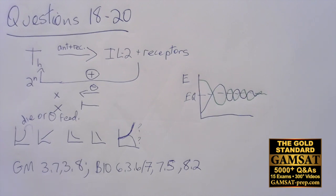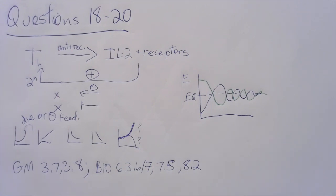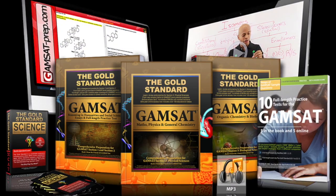And for some background information, you can look at graph analysis and exponential curves, GAMSAT math, 3.7, 3.8. And for positive-negative feedback, 6.36 and 7. And for the immune system, 7.5 and 8.2.